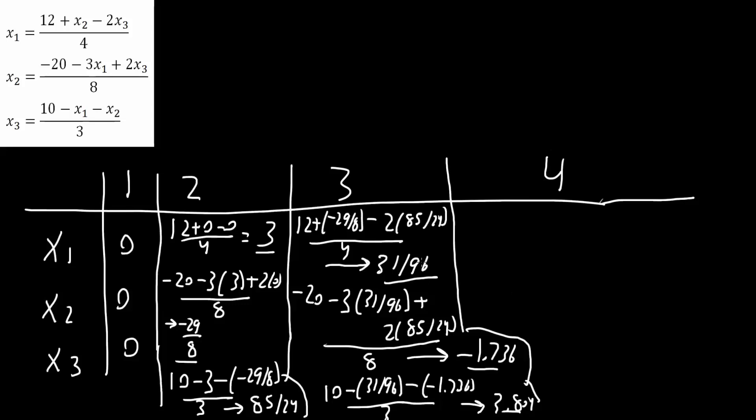Now in the third and final iteration, I will get a whole decimal number instead of a fraction. So it might be more clear. Same idea here. I plug in 12 plus x2, which is negative 1.736, and x3 is 3.804. So I write 12 plus parentheses negative 1.736 minus 2 times 3.804, divided by 4, and this right here would give us 0.664. And now this is x1, and now we will do x2.